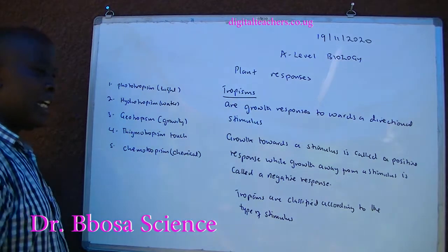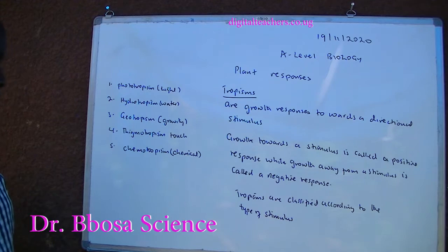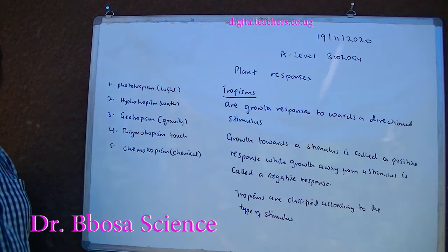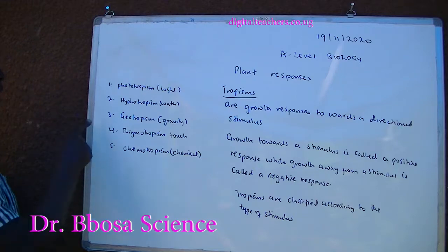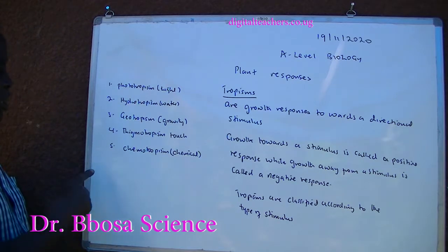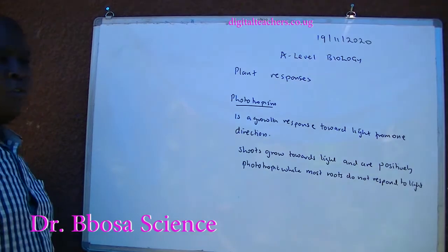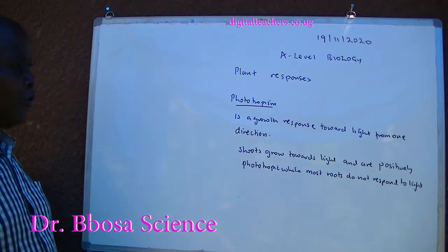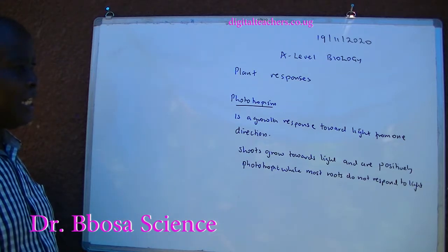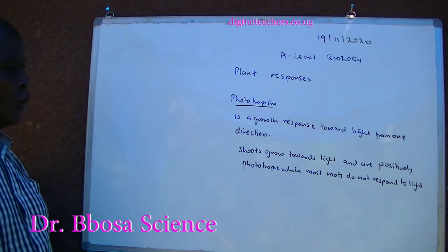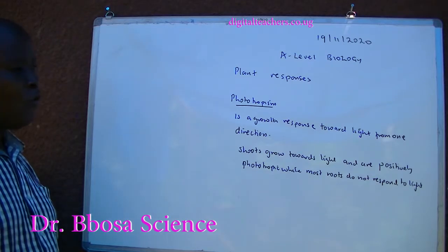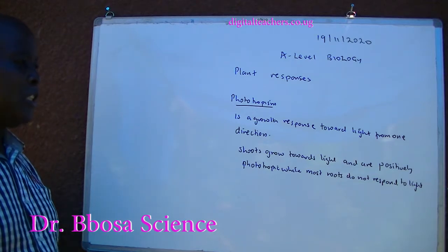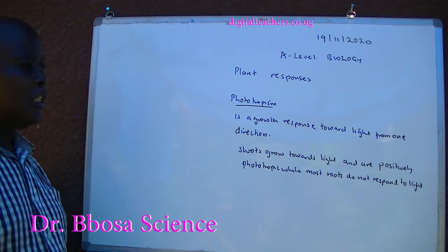Tropisms are classified according to the type of stimulus and they include: one, phototropism — light; hydrotropism — water; geotropism — gravity; thigmotropism — touch; chemotropism — chemical. Phototropism is a growth response towards light from one direction. Shoots grow towards light and are positively phototropic, while most roots do not respond to light.